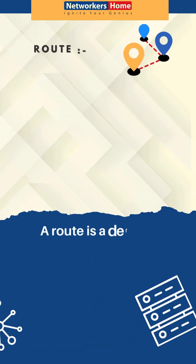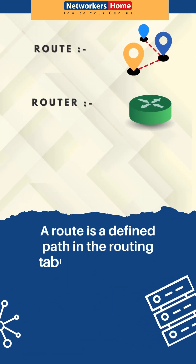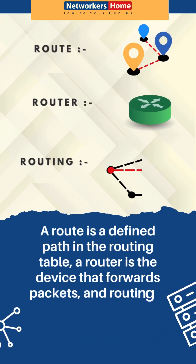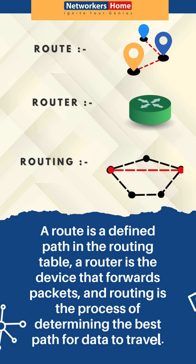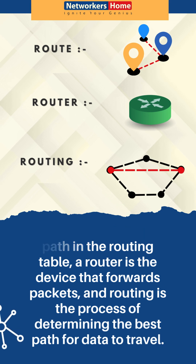To sum up: a route is a defined path in the routing table, a router is a device that forwards packets, and routing is the process of determining the best path for data to travel.